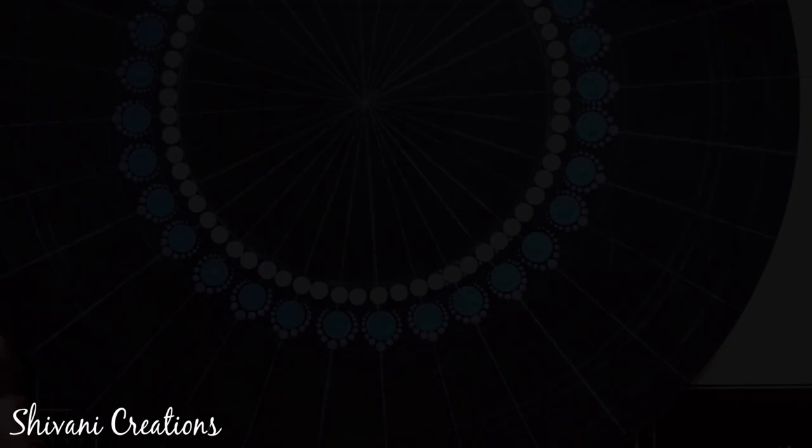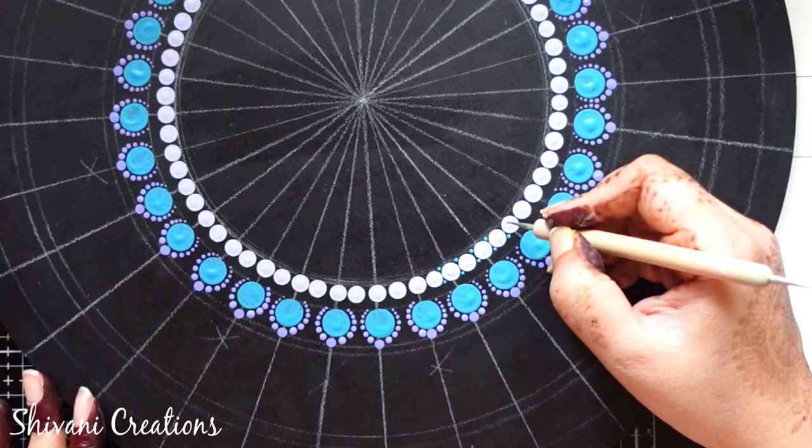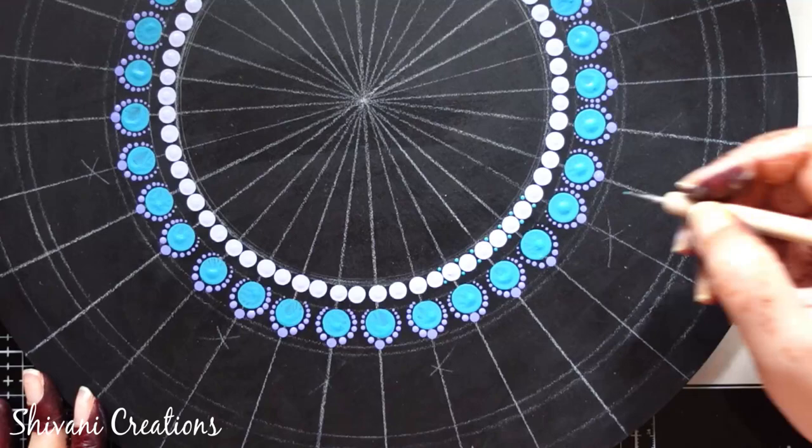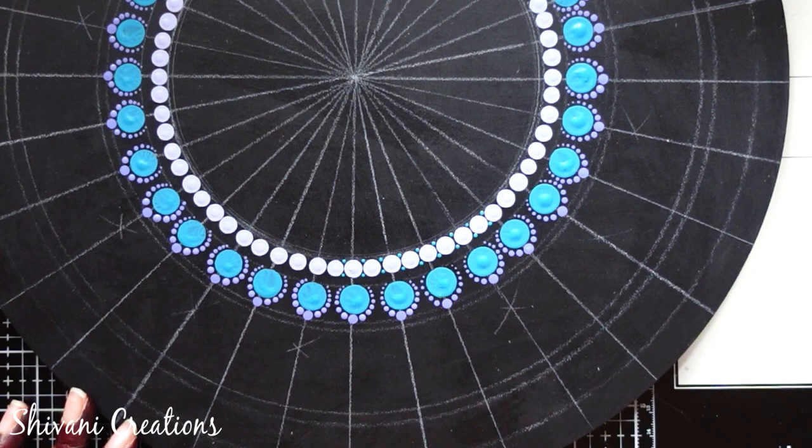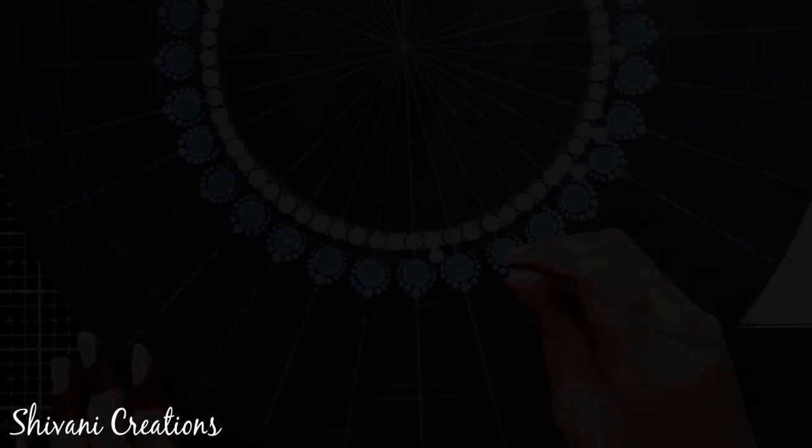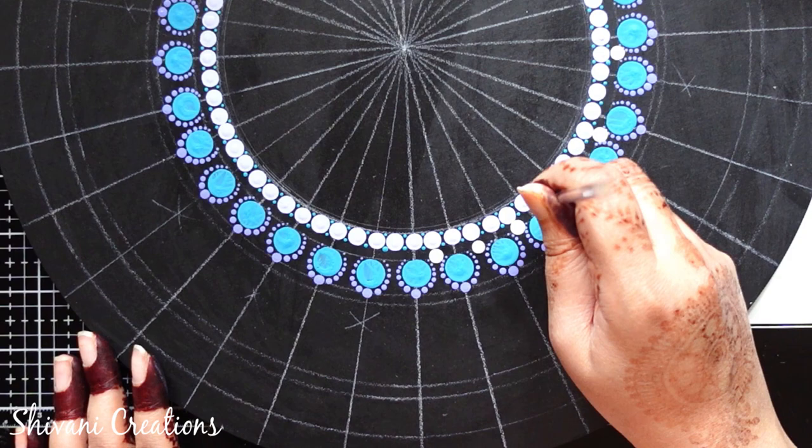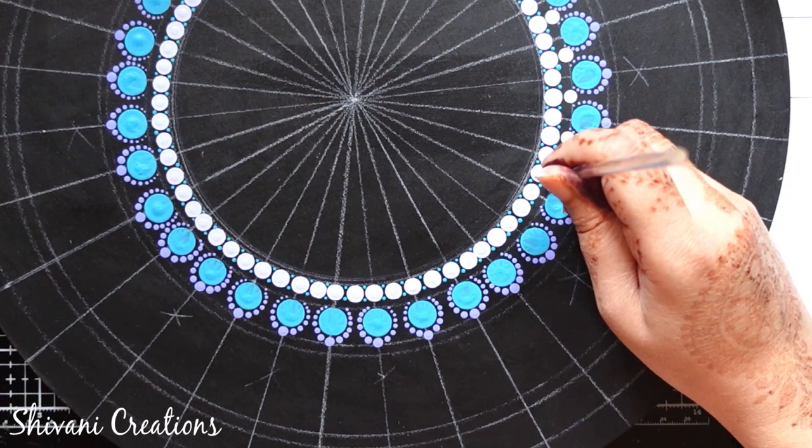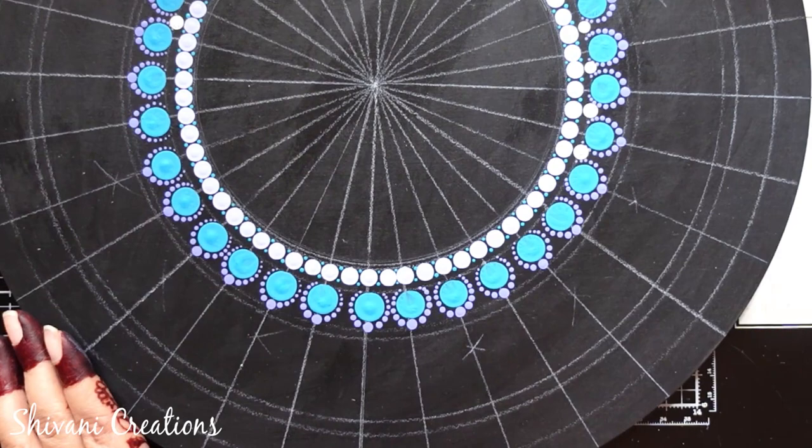Now between these light lavender dots I am putting teal color dots using very small size of my ball tool. Then between these teal dots again I am putting white color dots. So according to the size and space you have to choose your mandala tool and then start putting dots. And always take little contrast color which is not very near to the nearby colors and it will enhance the beauty.